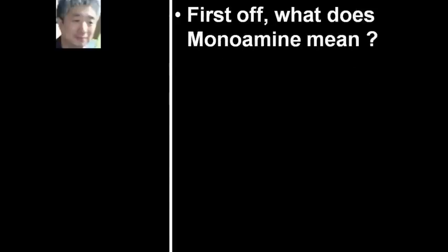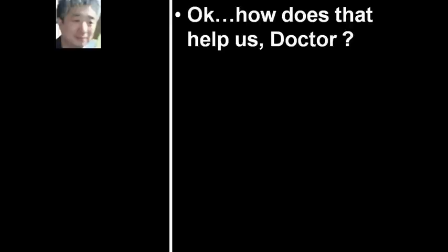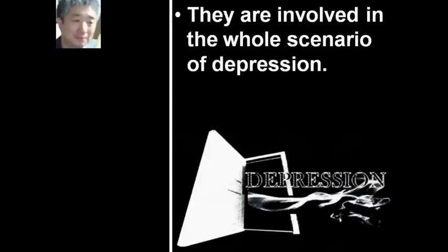The first theory of import on depression is the monoamine theory. What does monoamine mean? Mono is one, amine is amino acid. These neurotransmitters are monoamines: serotonin, norepinephrine, dopamine. They are involved in the whole scenario of depression.